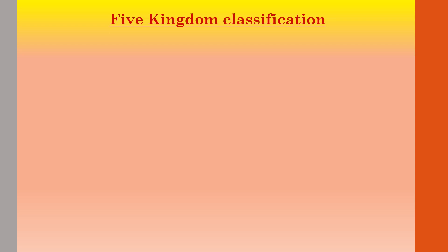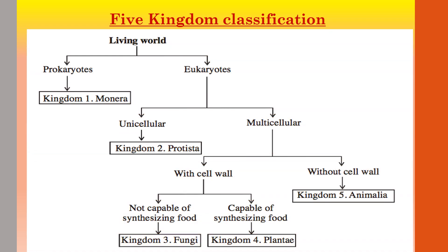This brings us to Whitaker's Five Kingdom classification. This is a very important table which gives an overview of the classification of organisms. The living world is divided into two groups: prokaryotes and eukaryotes. In prokaryotes, we have the kingdom Monera. Eukaryotes are further divided into unicellular and multicellular. In unicellular, we have the kingdom Protista. Multicellular organisms are further divided into those with a cell wall and those without a cell wall.